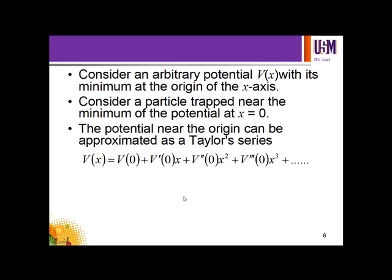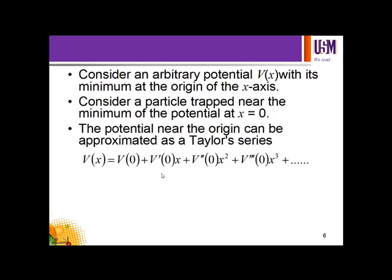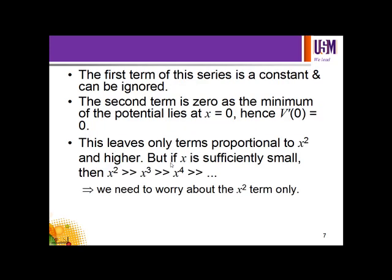Recall that V' means dV/dx, V'' means d²V/dx², and so on. At x equal to 0 where the potential is minimum, dV/dx is zero, meaning the second term is also zero. This leaves only terms proportional to x² and higher. But if x is sufficiently small, then x² is much greater than x³, much greater than x⁴, and so on.